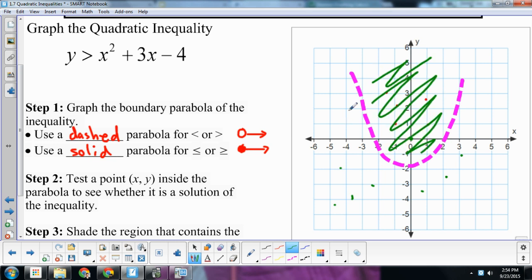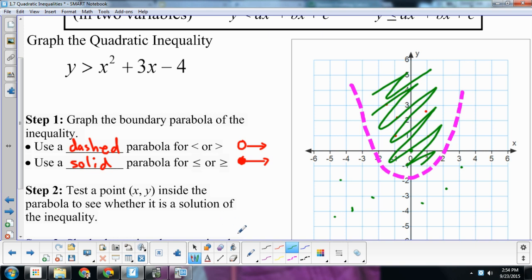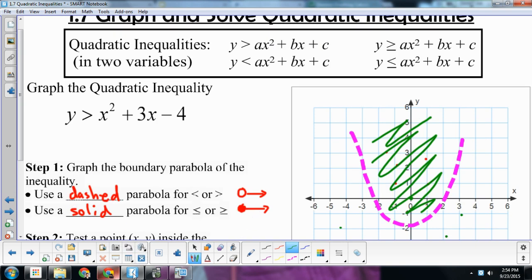Now, if it hadn't worked, then I'd say every other point outside of my parabola. So I shade the region that contains the solutions. Now, here's how you would do this using a couple of different kinds of technology.